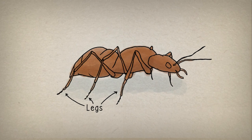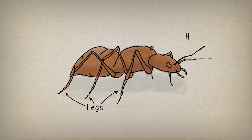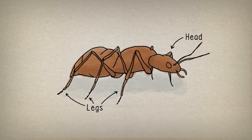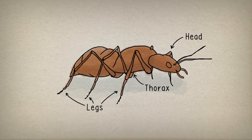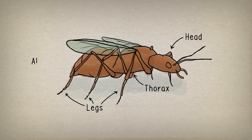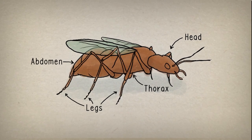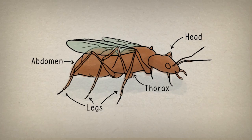Insects have three pairs of legs and a body divided into three sections: a head with eyes, mouth parts and antennae, a thorax containing muscles where the legs and wings are attached, and an abdomen containing stomach and breathing tubes.